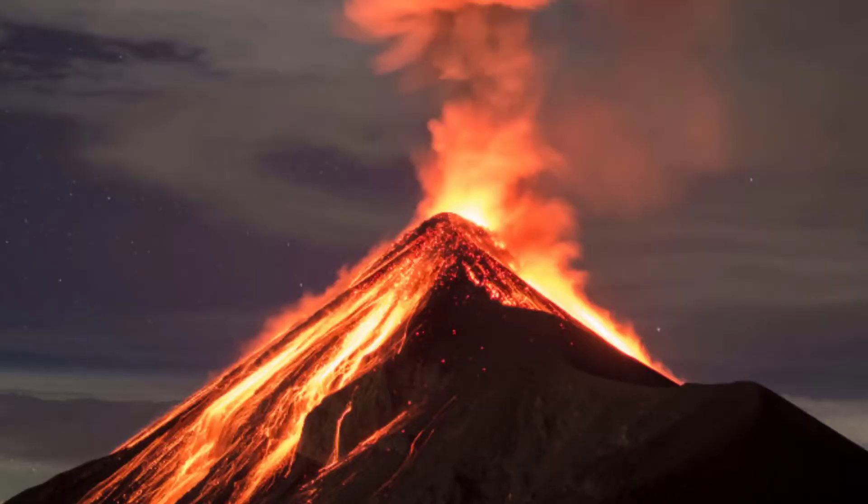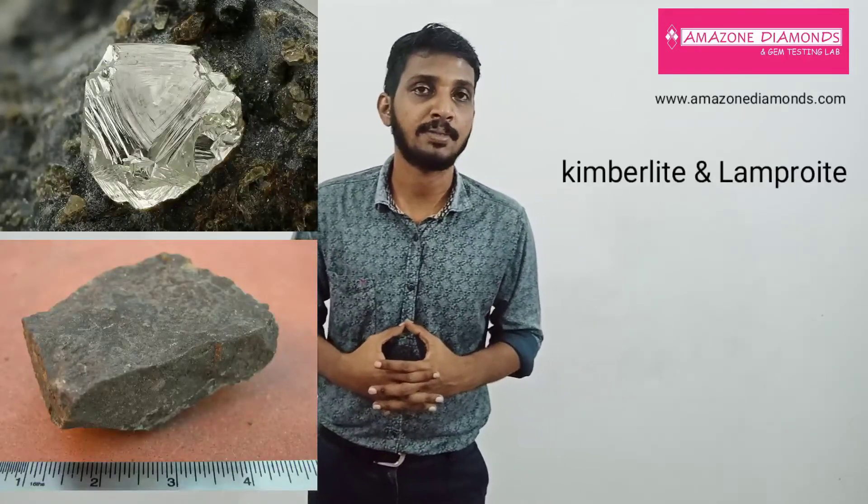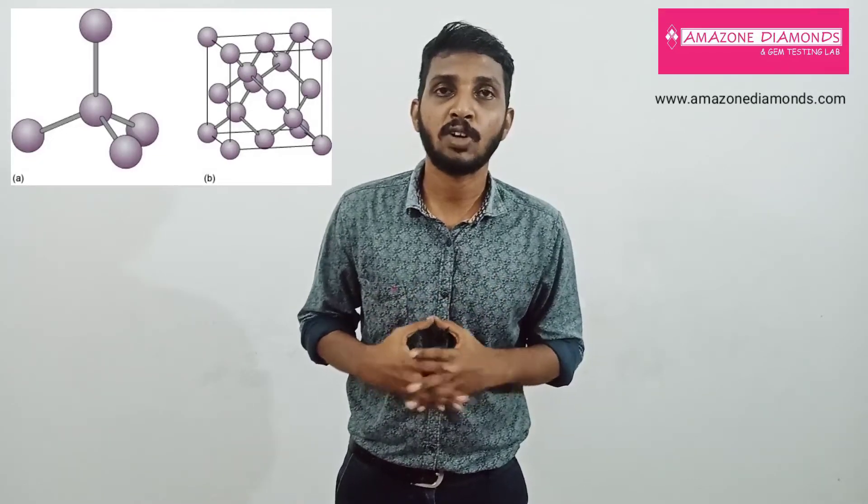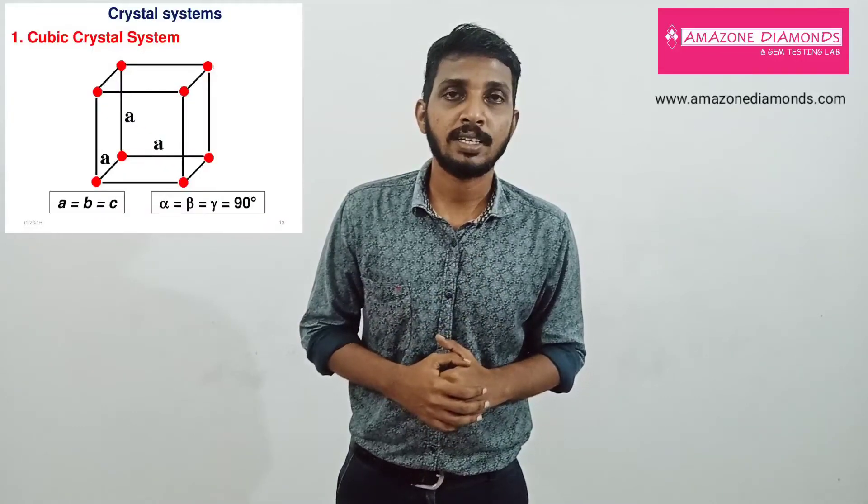Diamonds formed deep under the earth's surface reach the surface by volcanic eruptions. They are entrapped in the mother rock, which is igneous in nature, like kimberlite, lamproite, etc. Diamond is the purest form of carbon — formed by carbon atoms. Each carbon atom is connected to the adjacent four carbon atoms by covalent bonding and exists in a tetrahedral manner. By this structure, it crystallizes in the cubic crystallographic system.